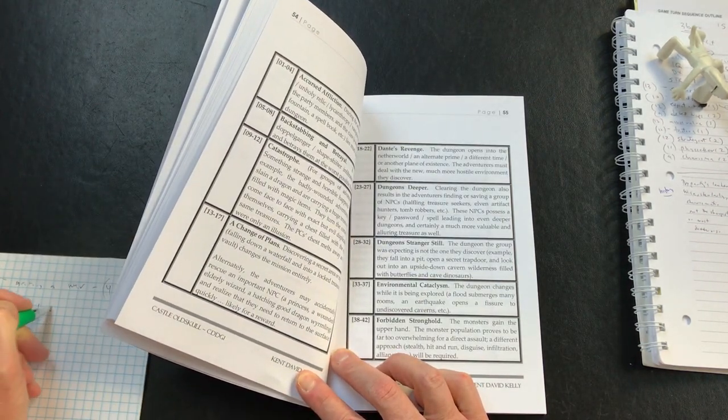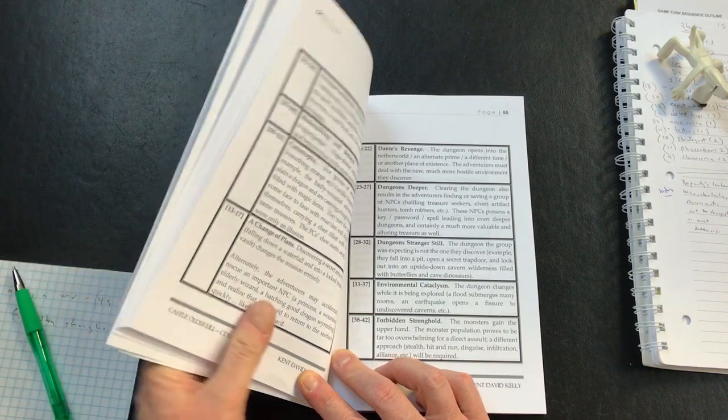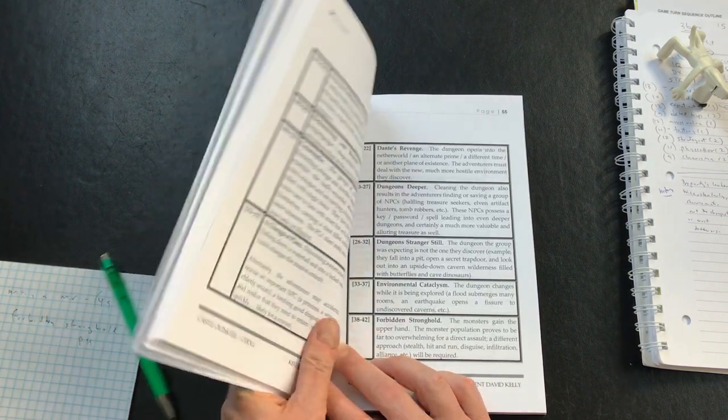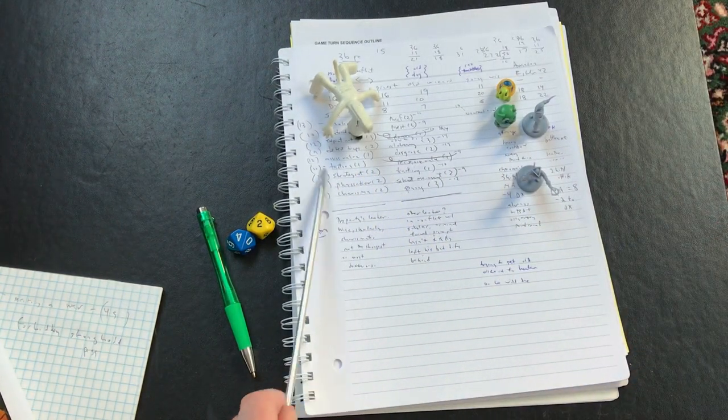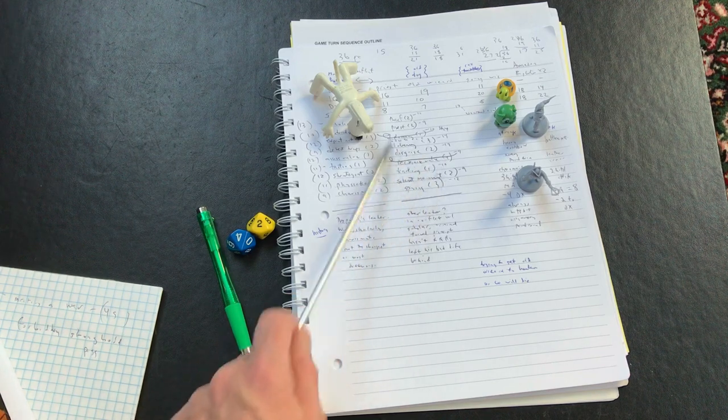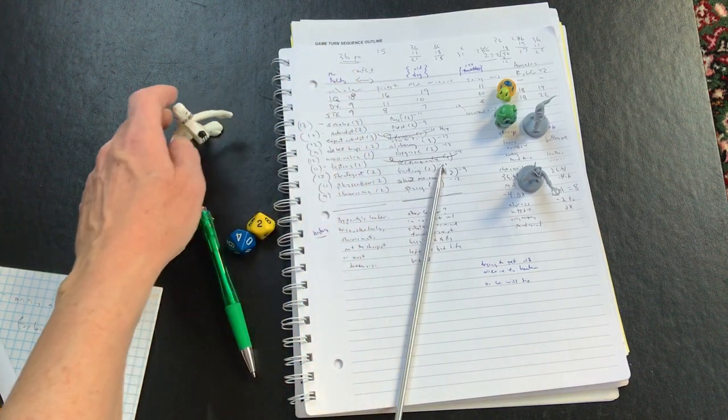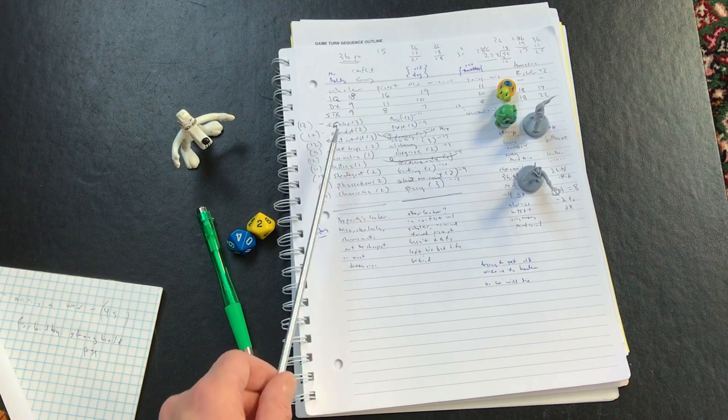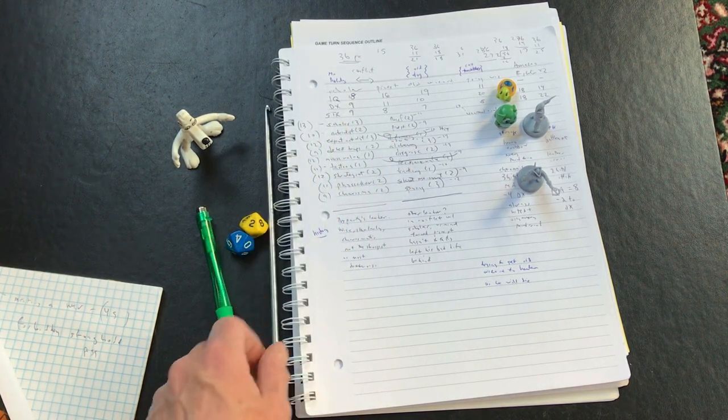I can already see in my mind - let me just write down forbidden stronghold. I mentioned that in my party the priest was going to be good with disguise. He's got disguise, he's got silent movement, tracking. I'm going to bring in an event or a situation where the priest wants to lead them in one way perhaps and there's some conflict here.